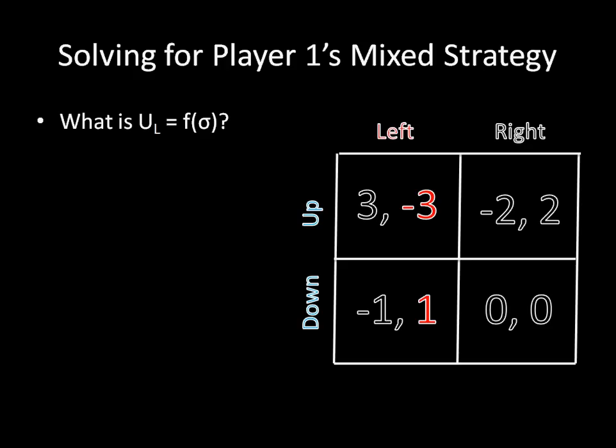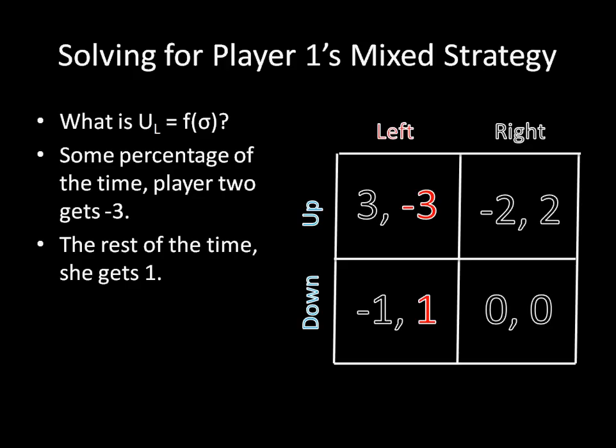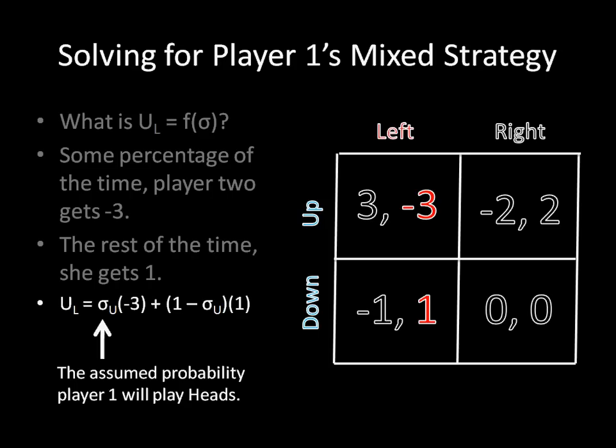Let's start with u of l. Suppose that player 2 is definitely playing left, and player 1 is mixing. What is player 2's utility for this situation as a function of sigma? Well, some percentage of the time, player 2 will get negative 3, and the rest of the time she'll get 1. Conveniently, we can rewrite these words like this: u of l equals sigma of u times negative 3 plus 1 minus sigma of u times 1.